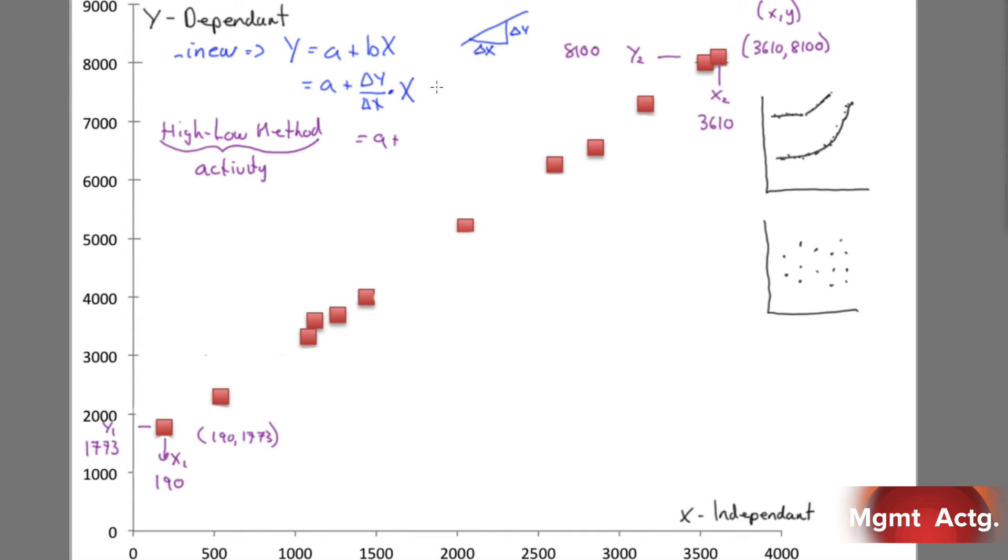So the high-low method, if we extend this out, equals a plus the change in y. We know is y2 minus y1. The change in y over the change in x, x2 minus x1, times x. So this here, we've just expanded b. So now we're in a position to solve it because we have our x and our y coordinates. So why don't we go ahead and do that. We'll do it over here.